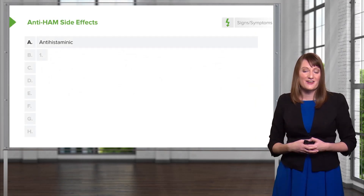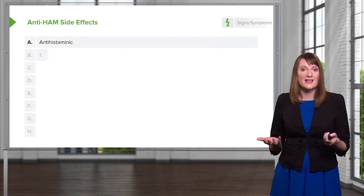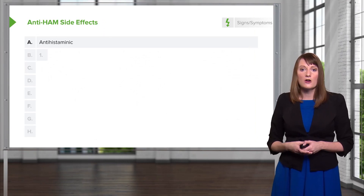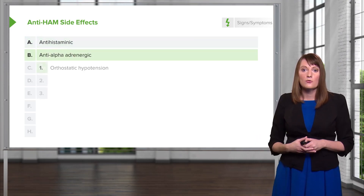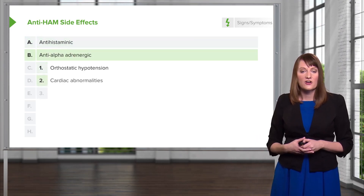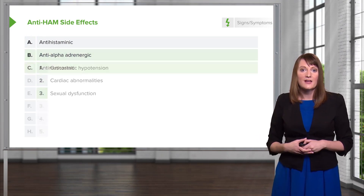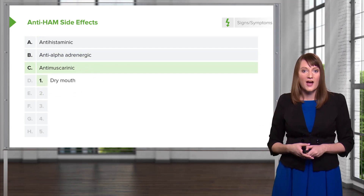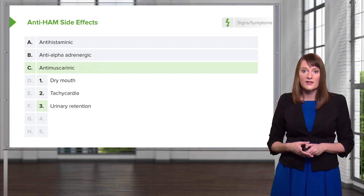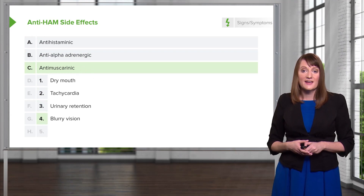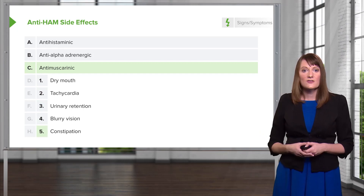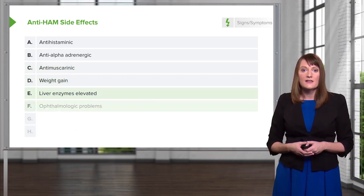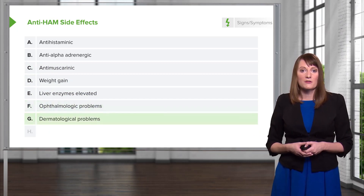The anti-HAM side effects: the H is antihistamine, where patients can become very sedated. The A is anti-alpha adrenergic side effects, which can look like orthostatic hypotension, cardiac arrhythmias, and sexual dysfunction. The M is antimuscarinic side effects, which include dry mouth, tachycardia, urinary retention, blurry vision, and constipation. Patients may also get weight gain, elevated liver enzymes, ophthalmologic problems, dermatologic problems, and seizures.